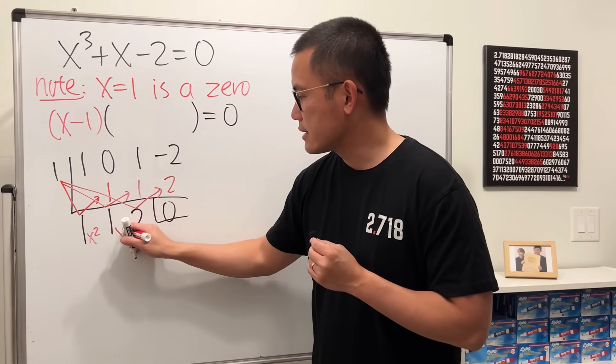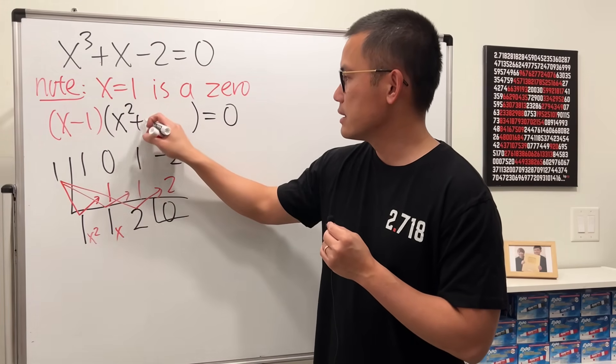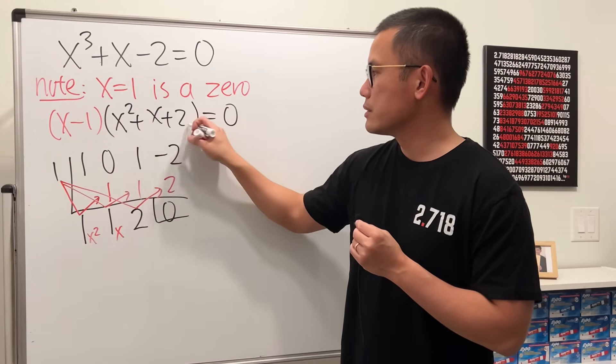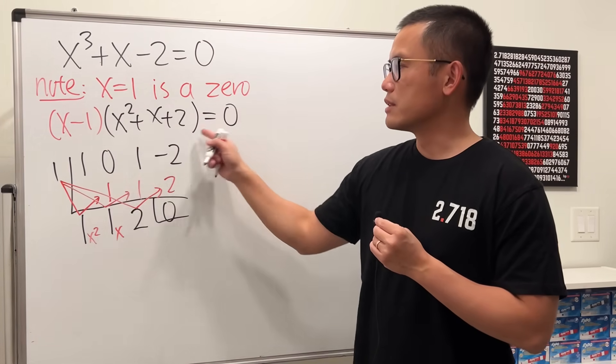And then 1x and then plus 2. Cool, so now we have an answer from here already. We just have to solve this: x squared plus x plus 2 equals 0.